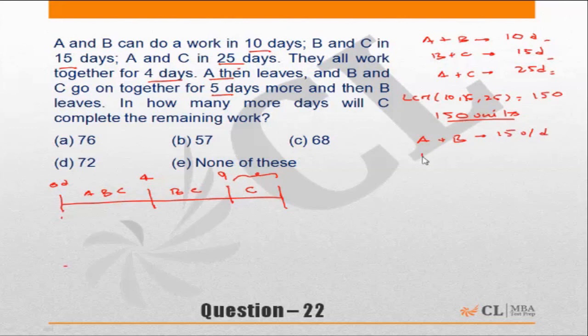B plus C will do 10 units per day, and A plus C finish the work in 25 days, so A plus C will do 6 units per day.